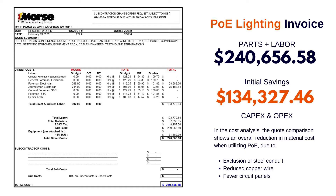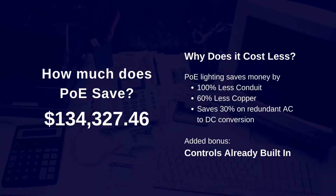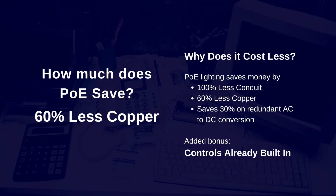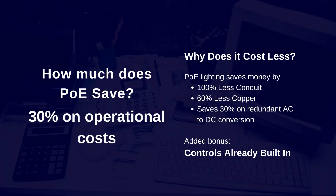That's close to 50% savings over what Resorts World would have expected to spend. POE actually saves on installation costs by removing the need for conduit. Low voltage lighting systems use 60% less copper and save 30% on operational expenditures by eliminating inefficient AC to DC conversion at each light. Best of all, the Denton DBI POE solution has controls built in, so there is no need to procure another $100,000 lighting control system.